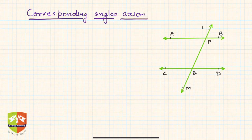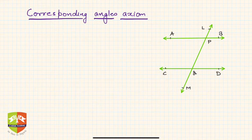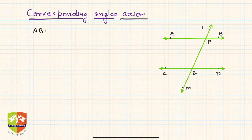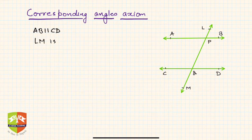Hello friends, welcome again to this session on lines and angles. We are moving ahead with a few properties around two parallel lines and a transversal. In this given construct, AB is parallel to CD — these are two coplanar parallel lines — and LM is a transversal.